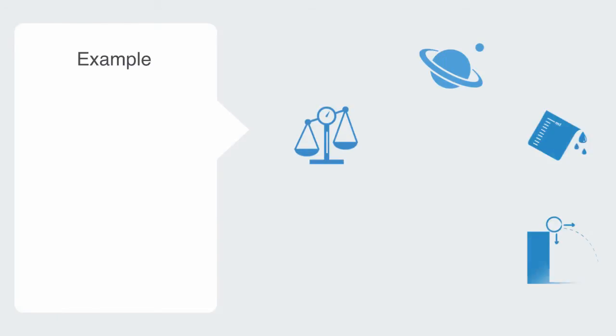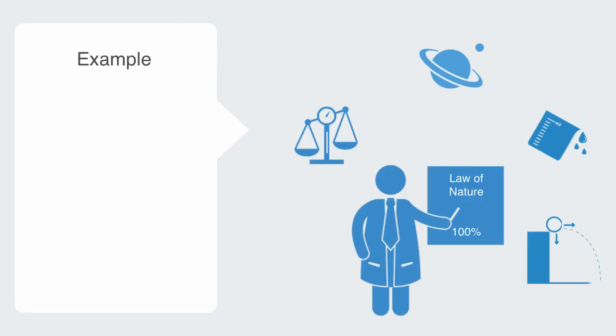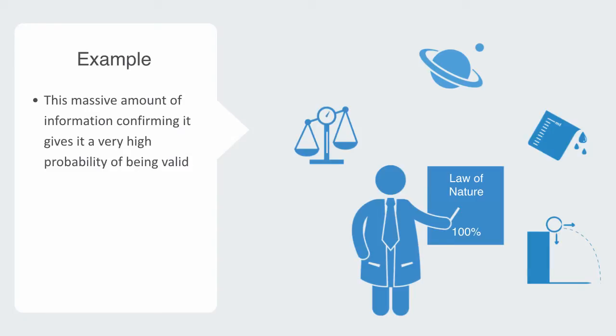For example, throughout your life, you have received constant information endorsing the validity to the existence of the force of gravity. This massive amount of information confirming it gives it a very high probability of being valid, and every day that probability goes up as you receive more confirmation of its existence.